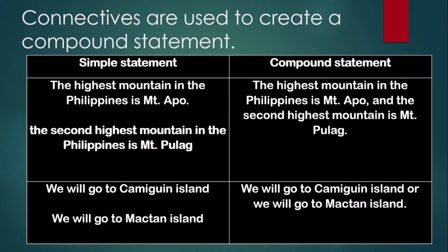The first example: The highest mountain in the Philippines is Mount Apo — that is the first simple statement. The second simple statement is: The second highest mountain in the Philippines is Mount Pulag. We are going to use the connective AND to create a compound statement: 'The highest mountain in the Philippines is Mount Apo and the second highest mountain is Mount Pulag.' The next example: We will go to Camiguin Island or we will go to Mactan Island, using OR as our connective.